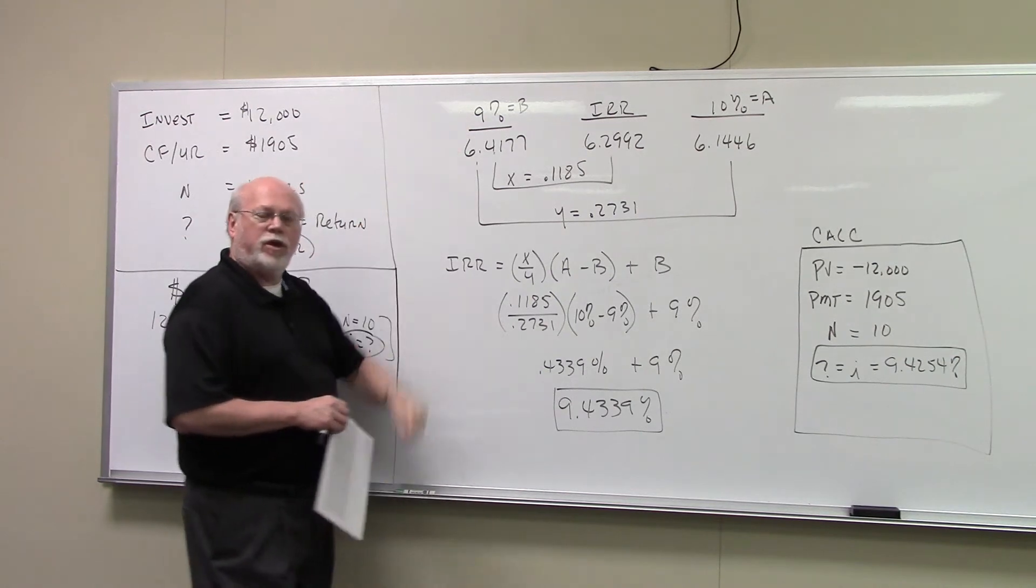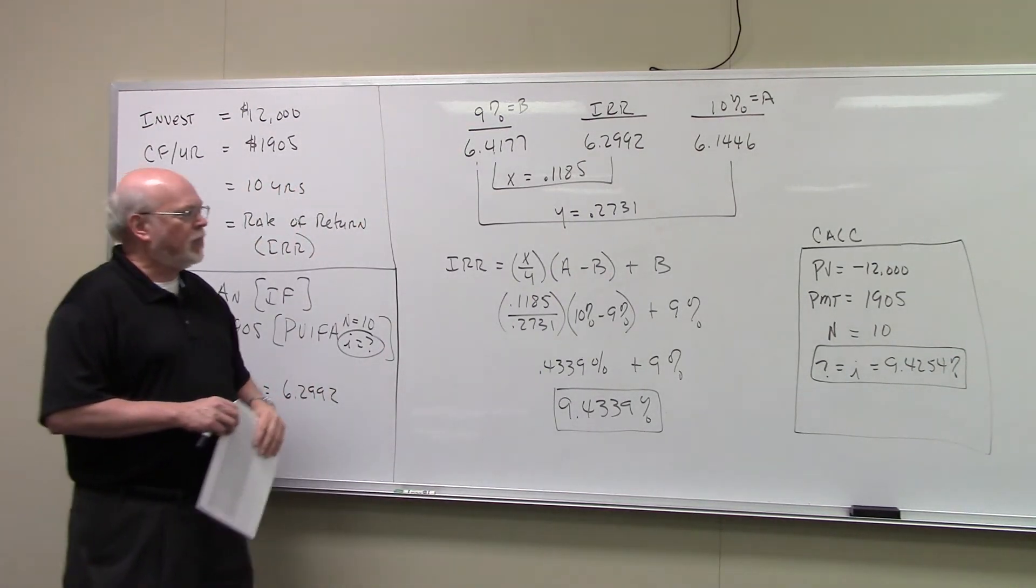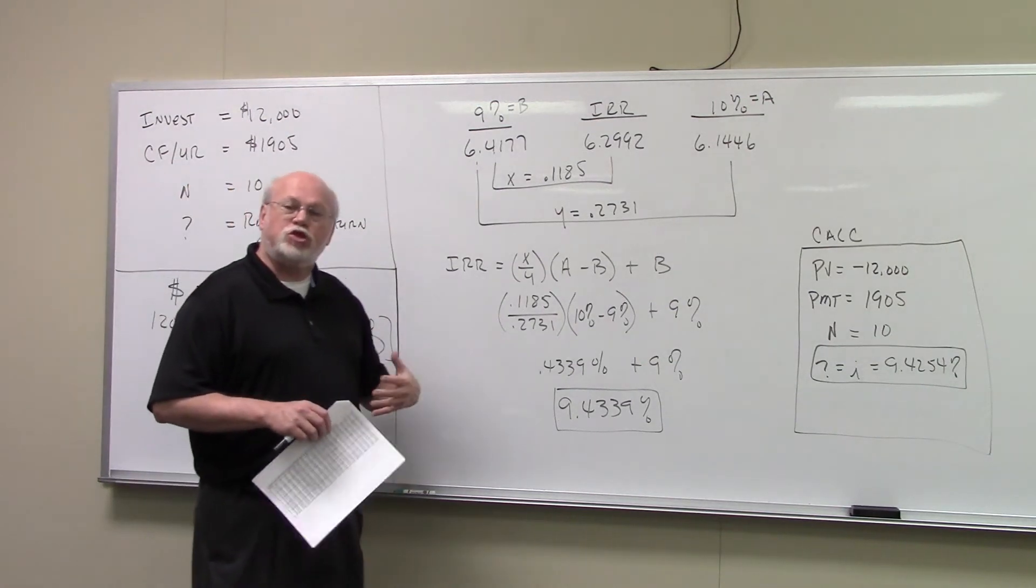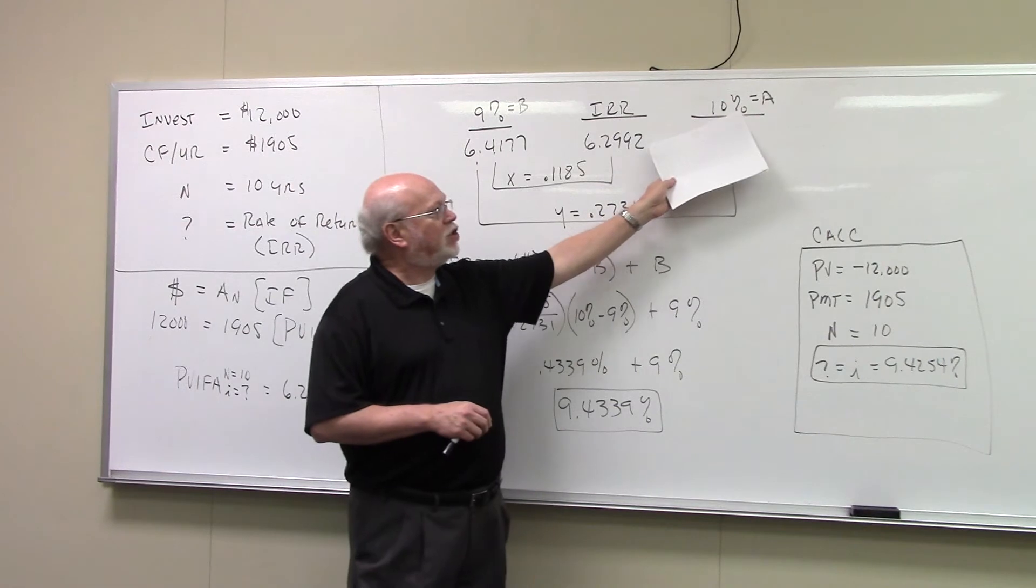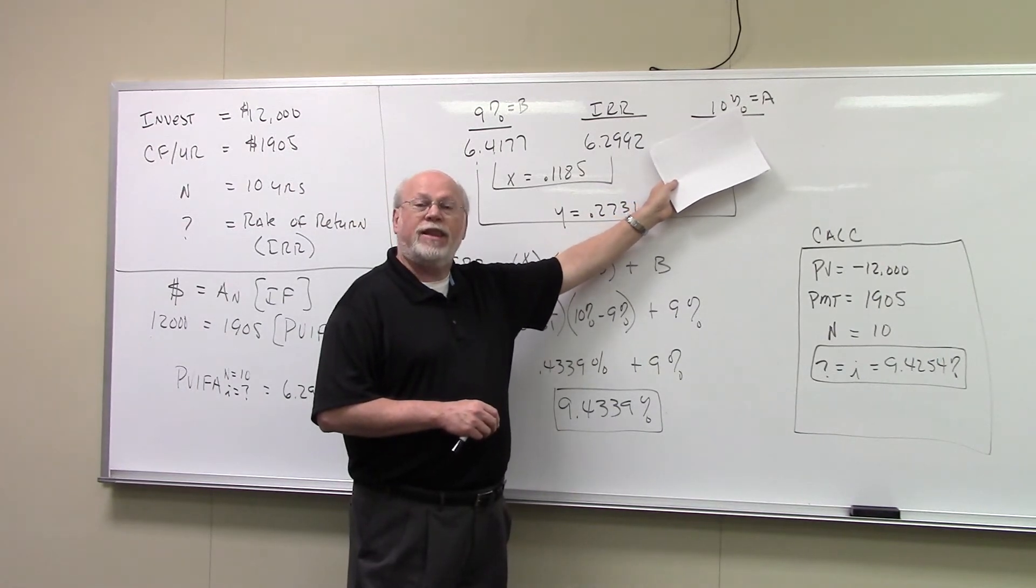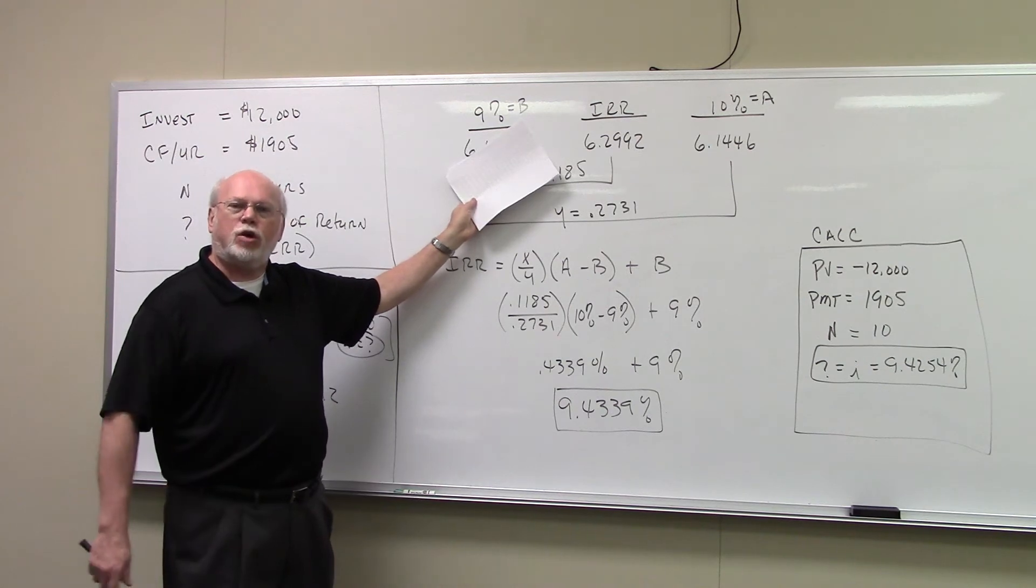This is indeed what I call the pitchfork and that's, you set up the pitchfork at that point. To find, to interpolate, to find the rate of return now, we're going to set this larger number on the right up here, that's equal to A. The smaller number on the left is always equal to B.